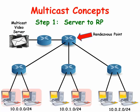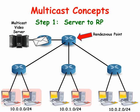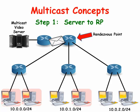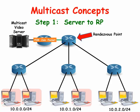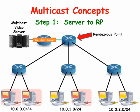When the multicast video server wants to send out multicast packets to clients on the network, the router that it is directly connected to must first contact the rendezvous point and let it know. The multicast register packets contain the physical unicast IP address of the server and the multicast IP address that it is using. The source tree from the server to the rendezvous point is created.